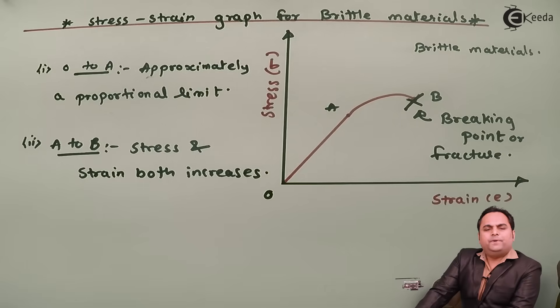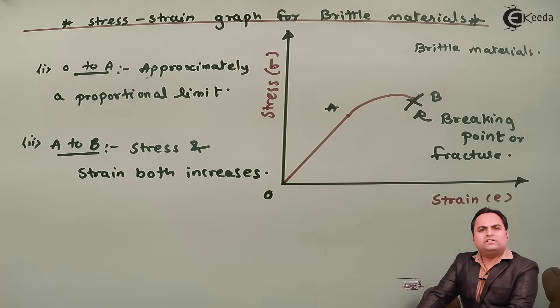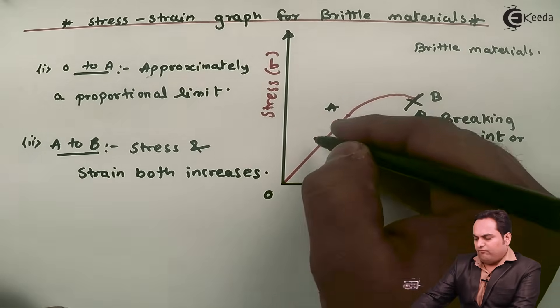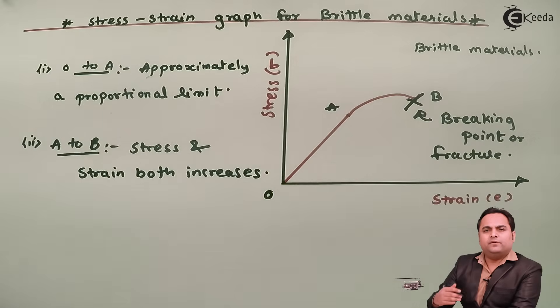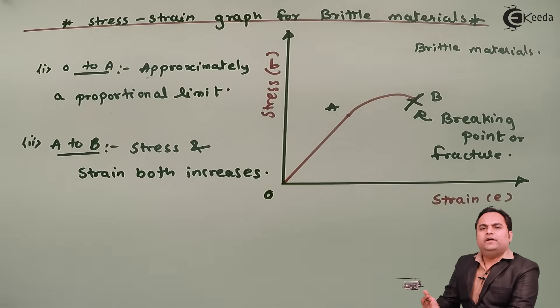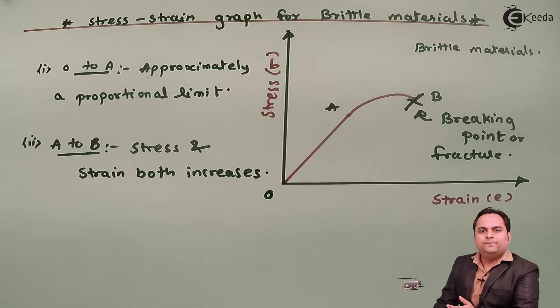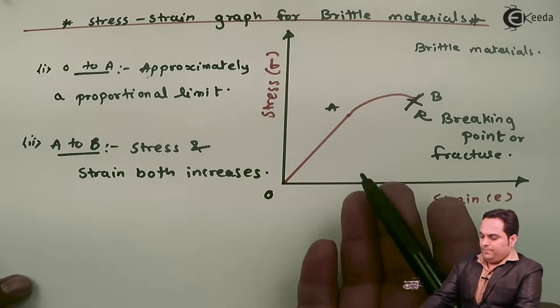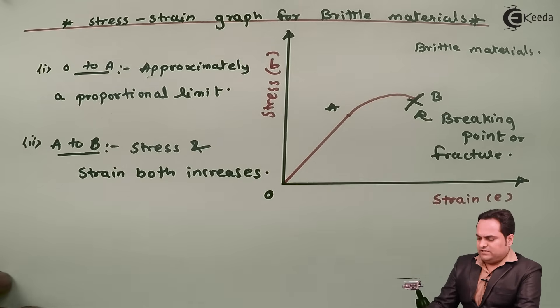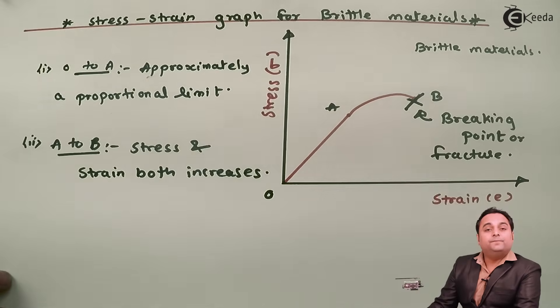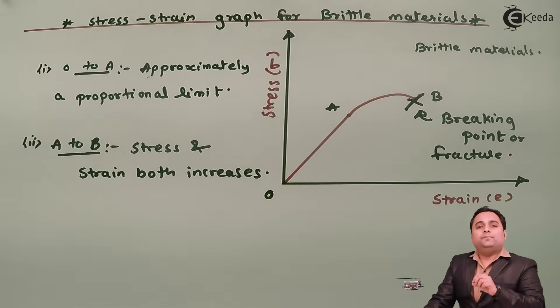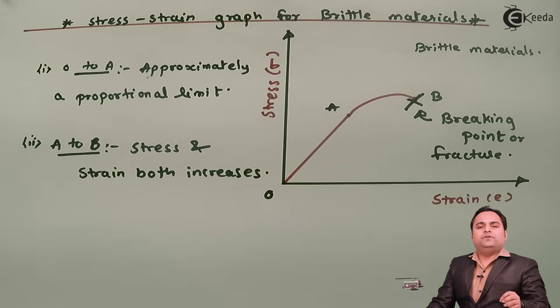In ductile materials, the graph flows, meaning the material gives warning before breaking - it elongates, its diameter reduces, and finally it fails. But in brittle materials, the material fails suddenly. This is the important difference between ductile and brittle materials.